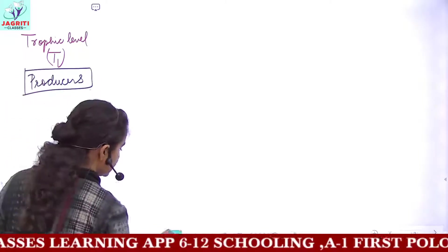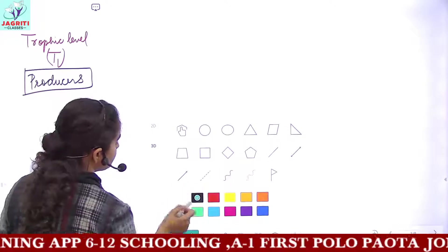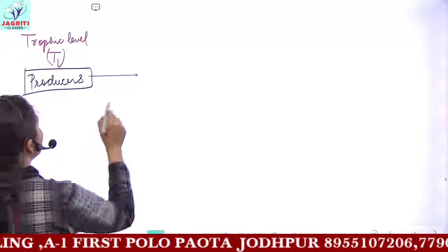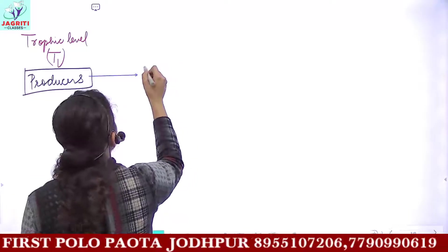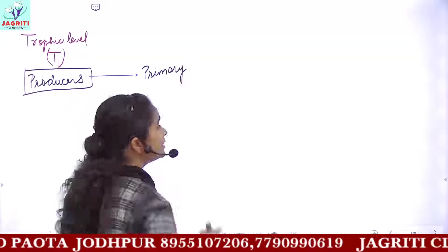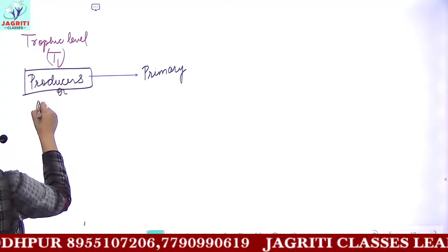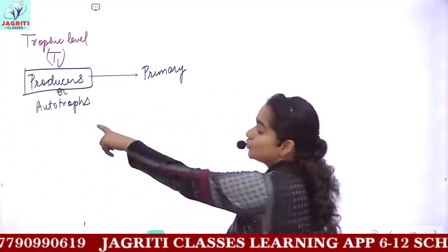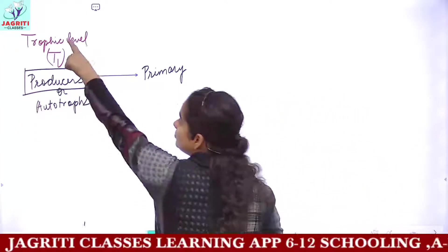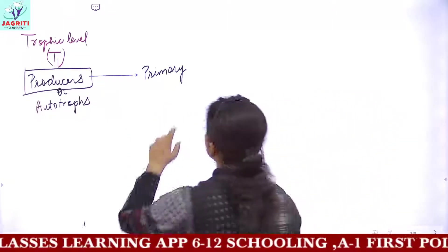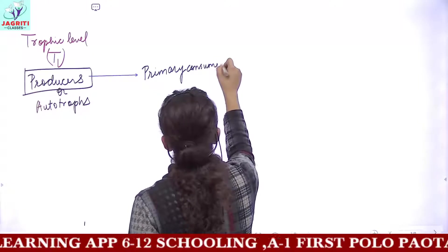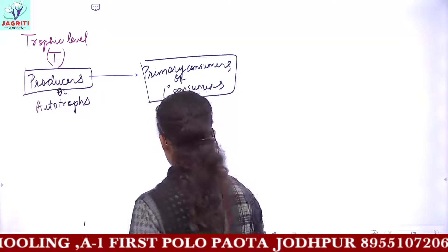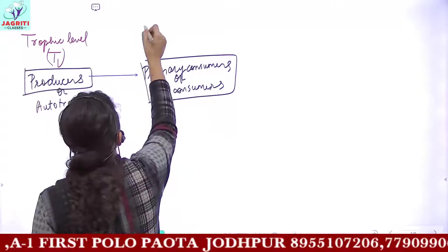These producers synthesize their own food. When producers synthesize their own food, they are eaten up by the next organism, called consumers. You will have primary consumers, secondary consumers, and producers or autotrophs — all these terms were discussed in our previous video lecture. Producers or autotrophs are organisms which can make their own food and they occupy the first trophic level in any given food chain.